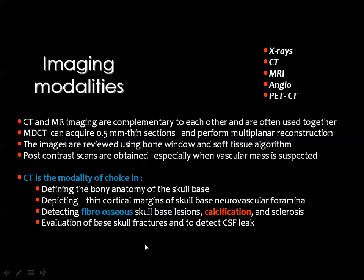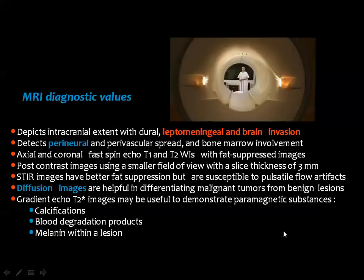The evaluation of fibrous dysplasia and other tumors of fibrous origin are better assessed by CT than MRI. CT is more helpful than plain x-ray and MRI in detection of calcium, bone sclerosis, fractures, and post-traumatic CSF leak. MRI is very important in evaluation of neural and leptomeningeal invasion by skull base tumors, intracranial extension, extension of tumor along nerve roots, perineural and perivascular spread, as well as evaluation of bone marrow involvement.